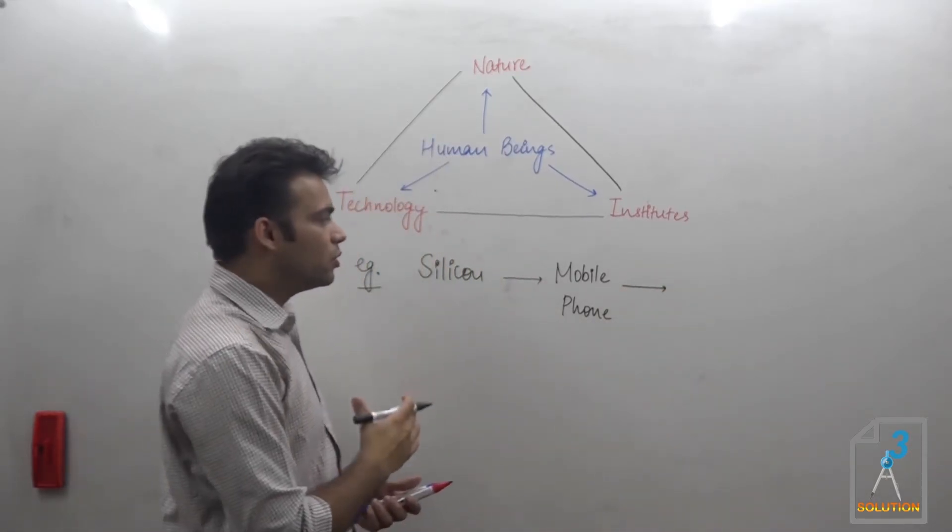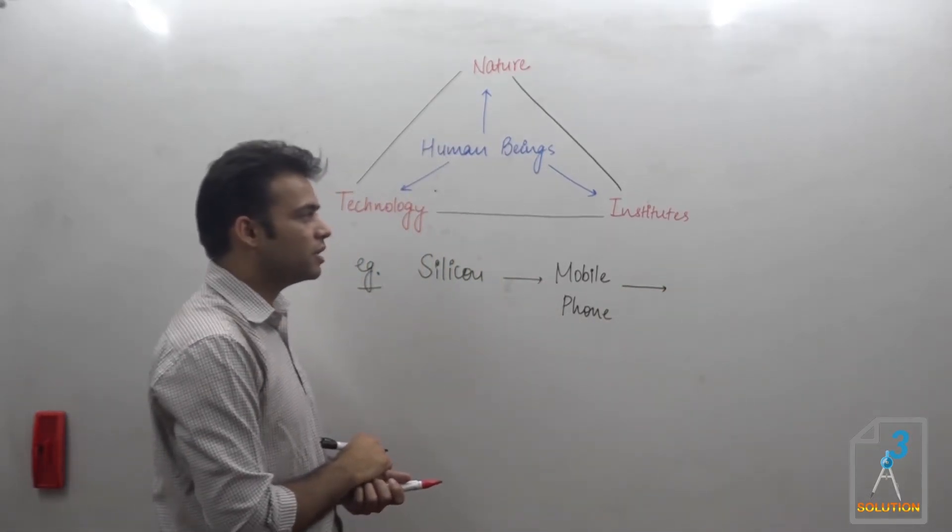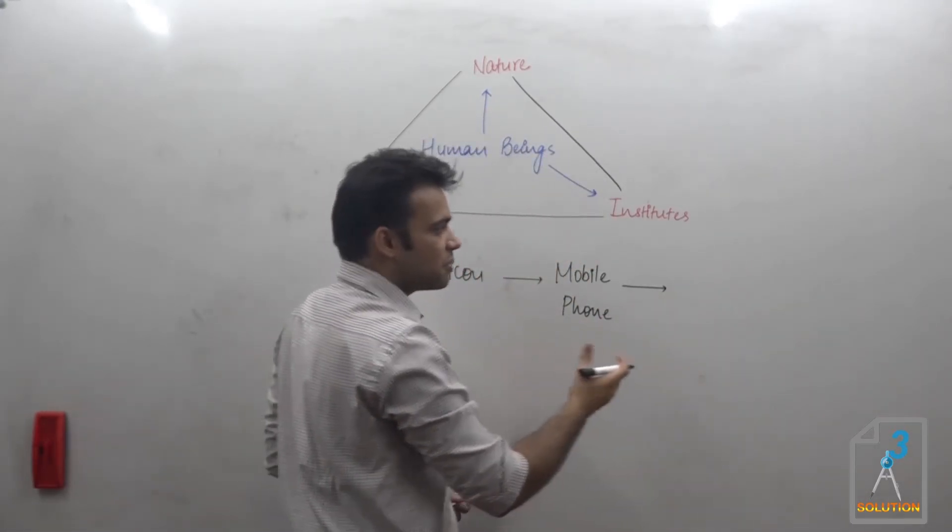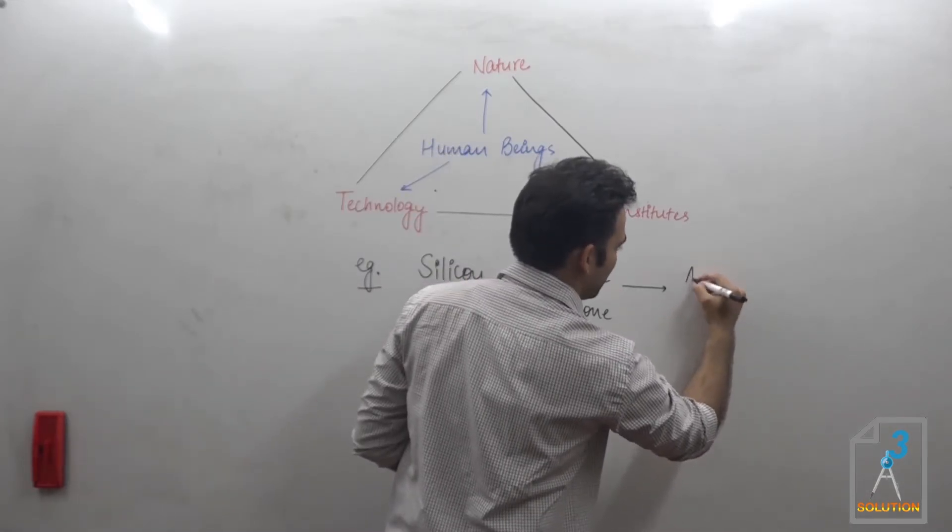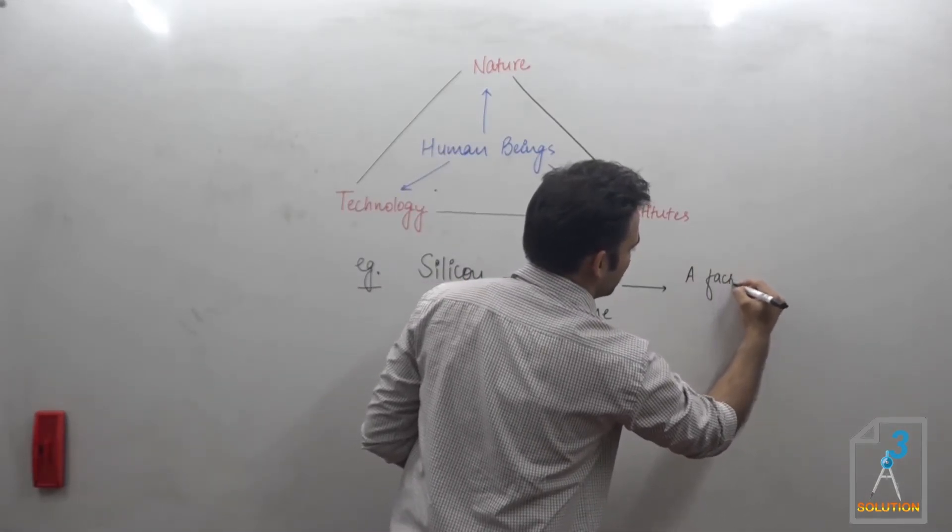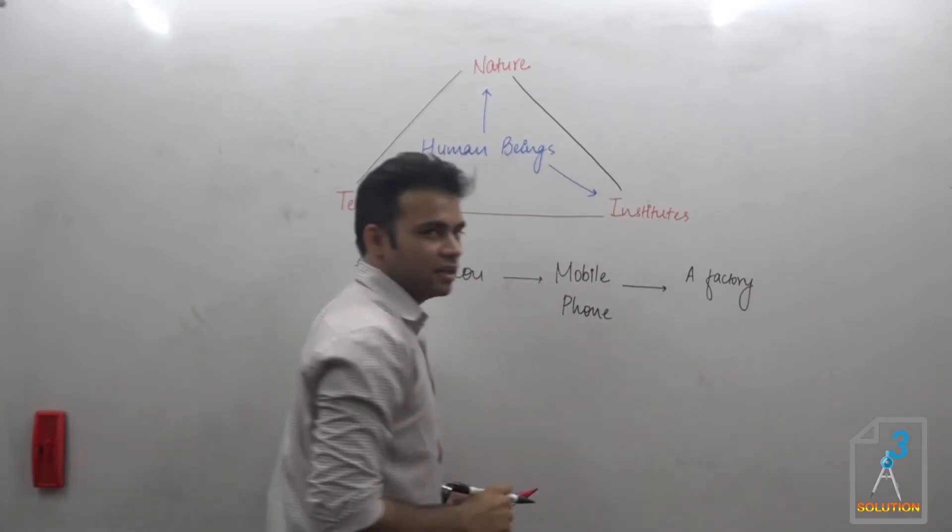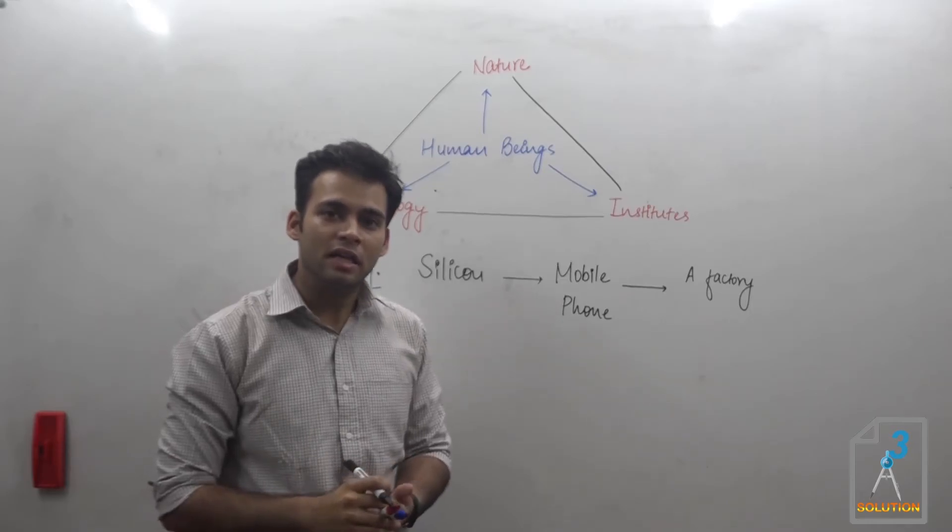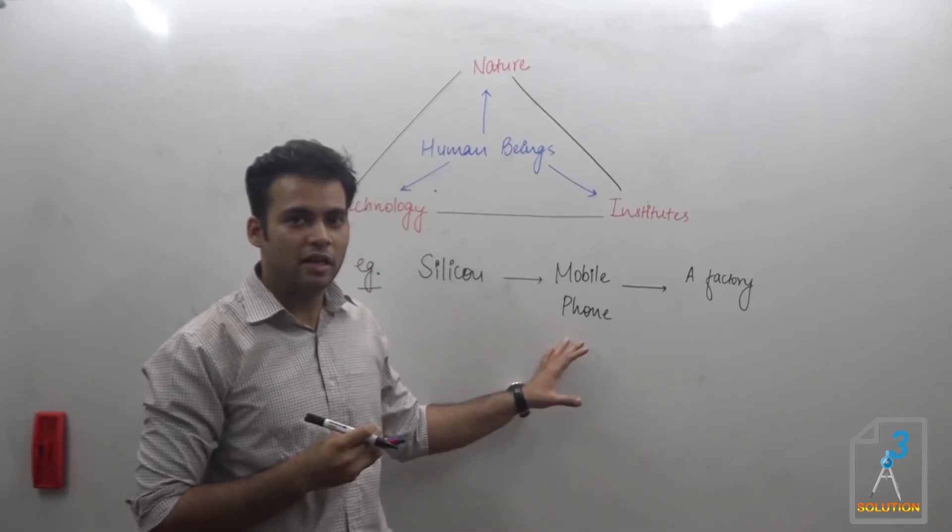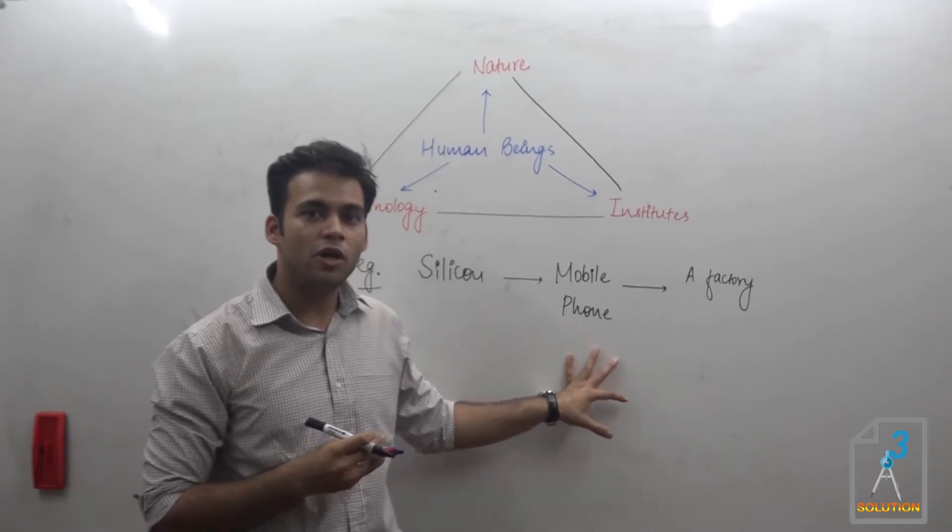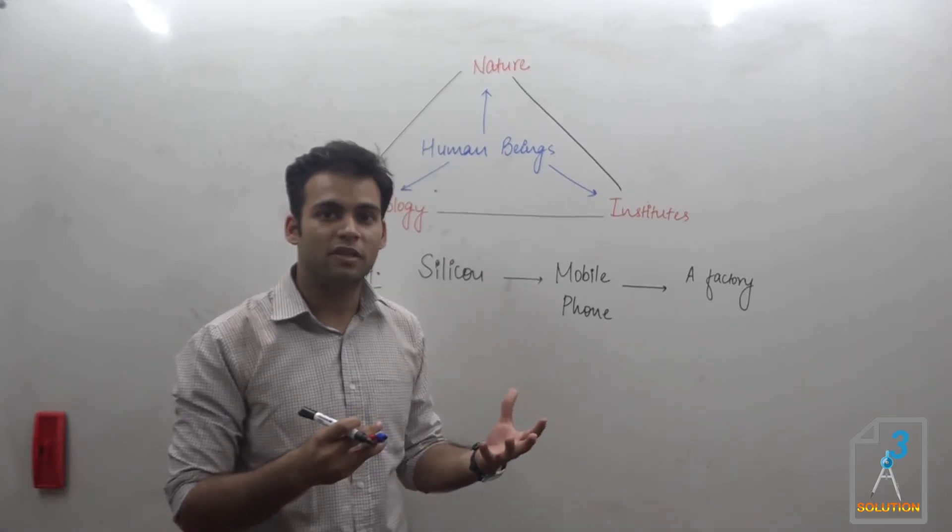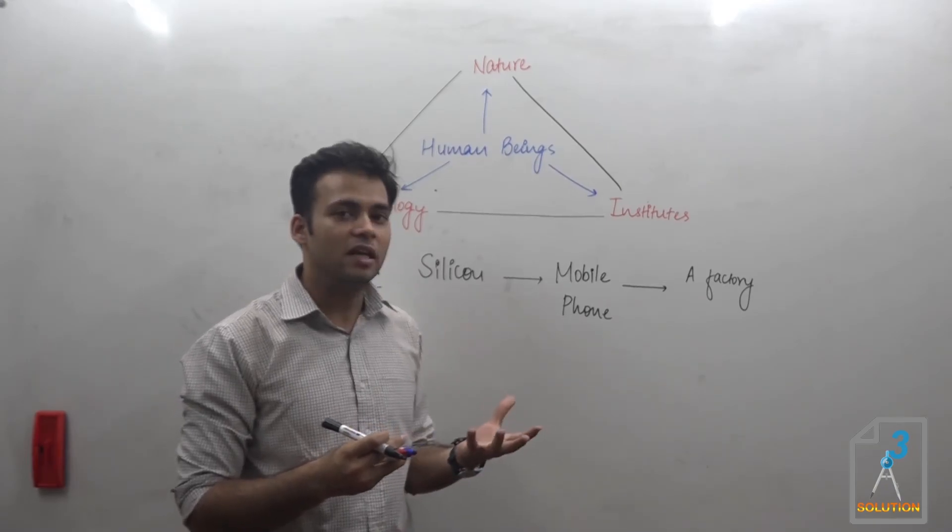When you learned how to make a mobile phone, you established institutes—for example, a factory. You established a factory that is making not just a few hundred but thousands of mobiles in a single day. Thus you progressed to making not just a simple phone but a smartphone, which would later evolve into a supercomputer.